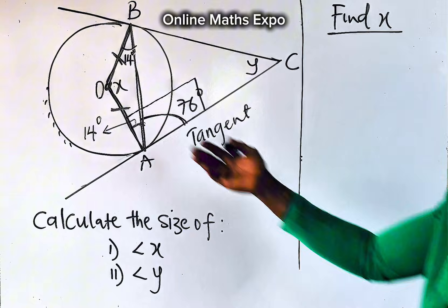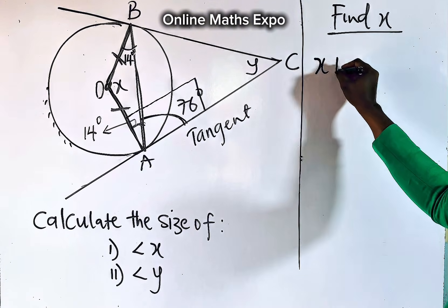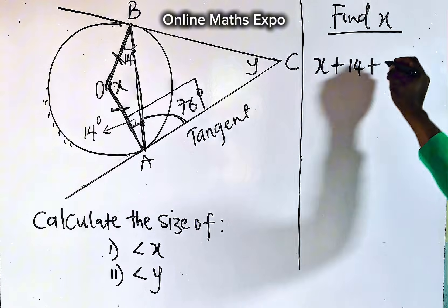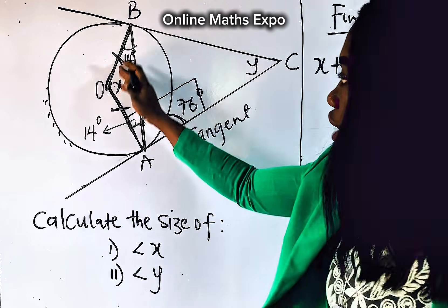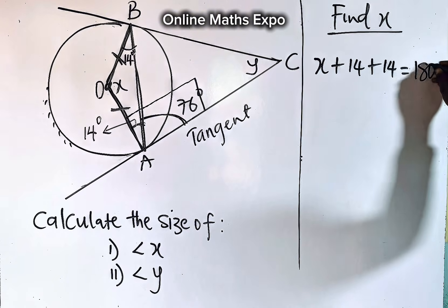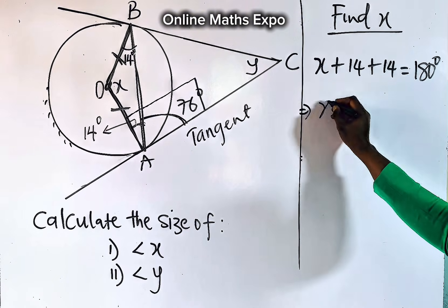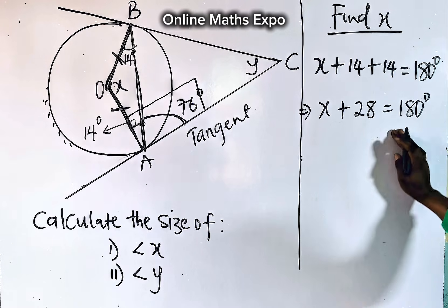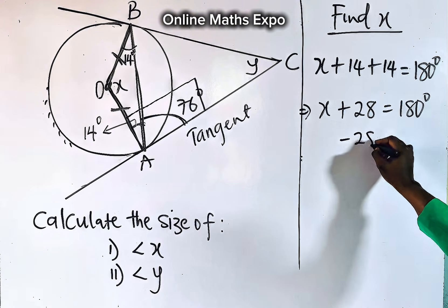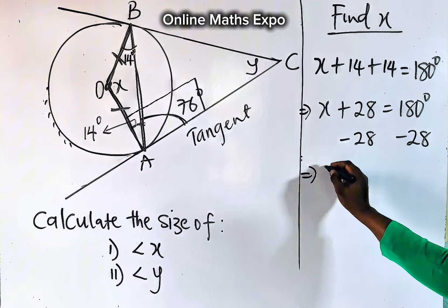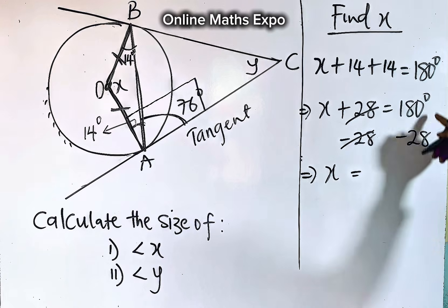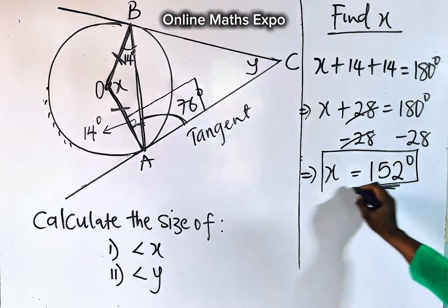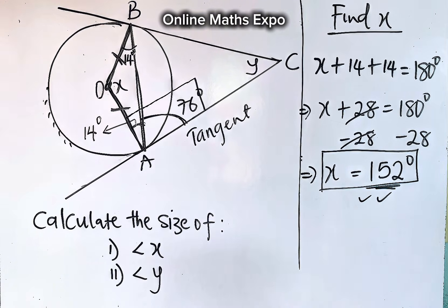Let's do that together. To find the value of x, we have it that x plus 14 plus this 14 here should be equal to the total angles of a triangle, which is 180 degrees. So what do you do? We solve for x. This gives you 28. It's 180 degrees. To remove this, you need to subtract. So you subtract 28 from both sides. If you subtract this, it gives you 152 degrees. So the value of x in this question is 152.